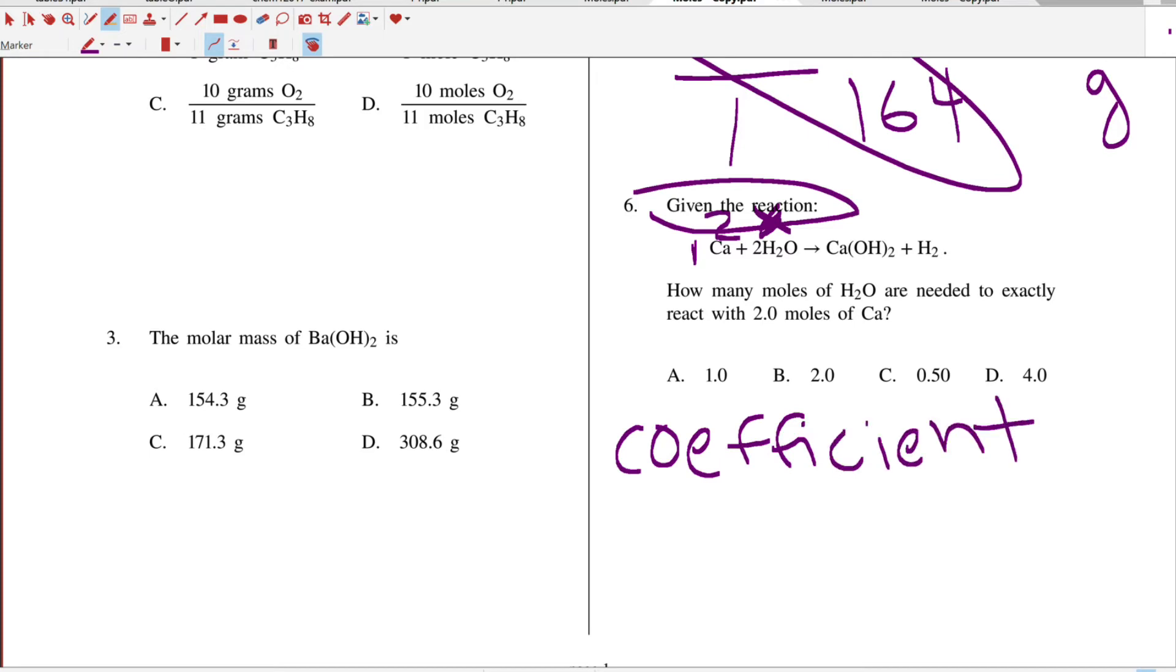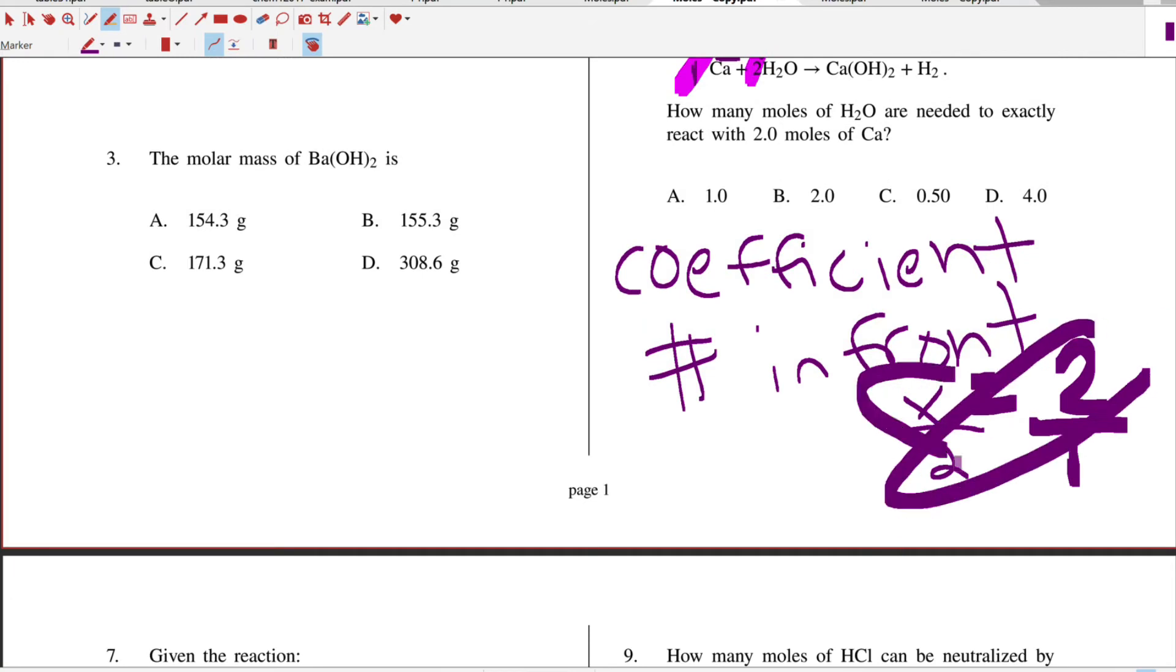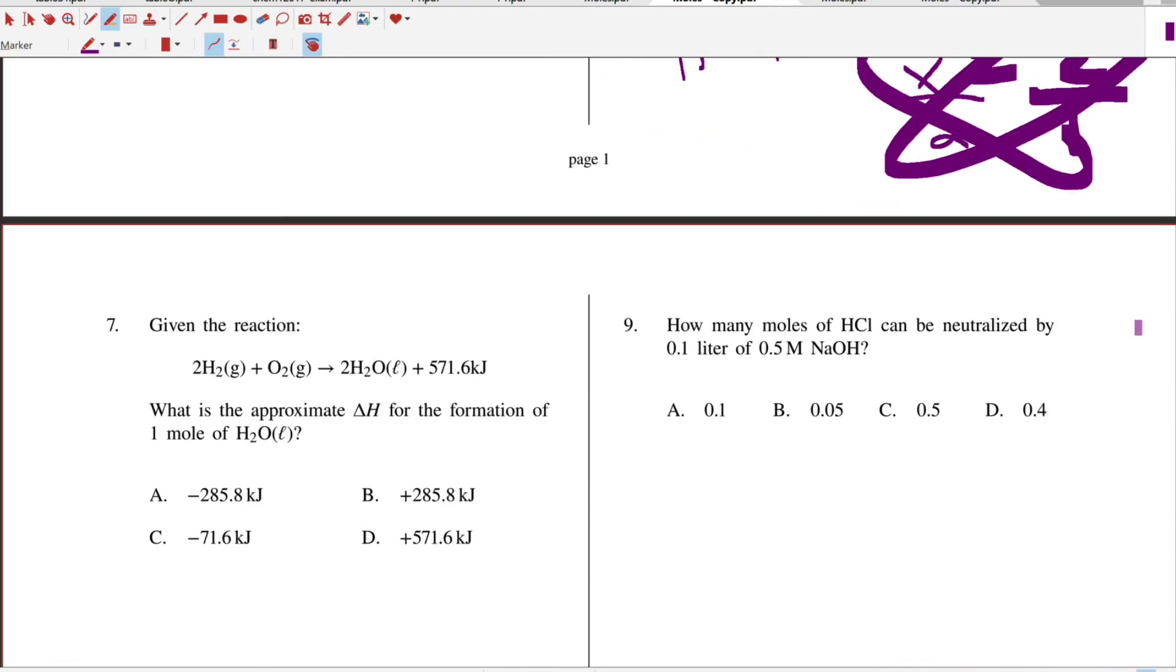So we're going to set up a mole to coefficient ratio. So it says how many moles of water? So that's x over the coefficient in front, which is a two. And then that's equal to the two of calcium over the coefficient in front, which is a one. And then when you cross multiply, you get x times one equals two times two. So the answer would be four moles. And that formula is not on Table T, but it will say 'given a reaction.'